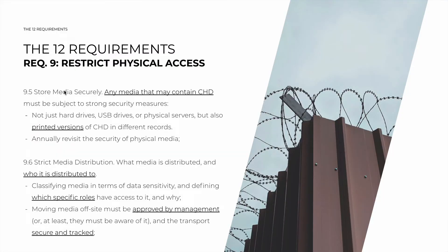Requirement 9.5 is about the physical media themselves — storing physical media securely. Any media that contains cardholder data must be under lock and key, subject to strong security measures. Physical media are not just hard drives, USB drives, or physical servers, but also printed versions of cardholder data. Even in a simple environment like a coffee shop with paper receipts containing cardholder data, they must be in a locked room with strict security measures. It's also important to annually revisit the security of physical media, as networks, people, vulnerabilities, and data flows can change.